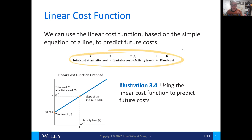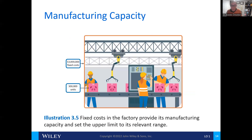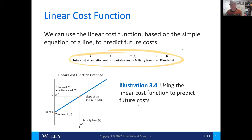Here we see the linear relationship. The total cost of the activity is based on the variable cost times the activity level, plus the total fixed cost — that gives us the total cost. Variable plus fixed. The variable cost is determined by the variable rate times the number of units being produced. The linear cost relationship is constant and rises with the level of output.